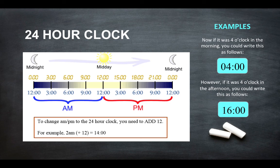So if it was 4 o'clock in the morning, you could write this as follows: 04:00. However, if it was 4 o'clock in the afternoon, you could use military time to say it was 1600 hours, because you've added the 12 to the 4.